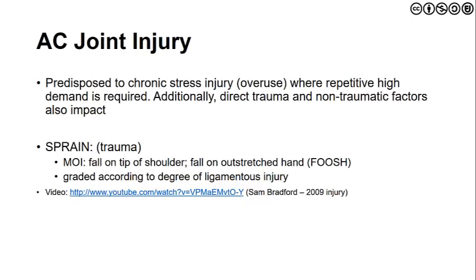If it is macrotrauma, we are likely to see a sprain. The mechanism of injury is likely one of two things: a fall on the tip of the shoulder — which is what Sam Bradford suffered in 2009 — or a FOOSH injury, which is an acronym for fall on outstretched hand, common throughout the upper extremity. The AC joint injury is then graded according to the degree of ligamentous injury and separation of the two articular surfaces.